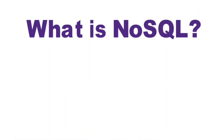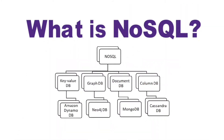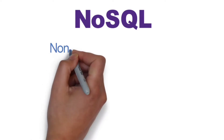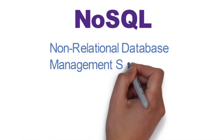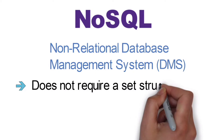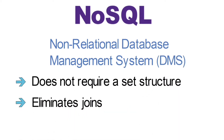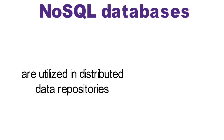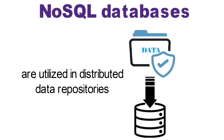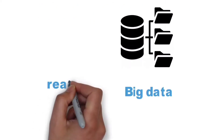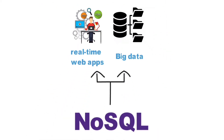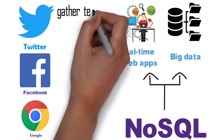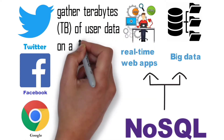What is NoSQL? A database that is not SQL is referred to as Not Only SQL or Not SQL. NoSQL is a non-relational database management system that does not require a set structure, eliminates joins, and is simple to scale. NoSQL databases are utilized in distributed data repositories with massive storage requirements. Big data and real-time web apps make advantage of NoSQL. Companies such as Twitter, Facebook, and Google, for example, collect terabytes of user data on a daily basis.